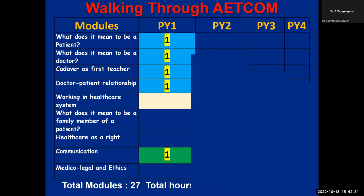When breaking competencies into objectives, you should see that most roles are addressed — not just one particular role. When the competency is related to communication, also see that the role of team leader is addressed. As much as possible, try to cover all five roles. If certain roles are not possible to address, try to address the maximum number.